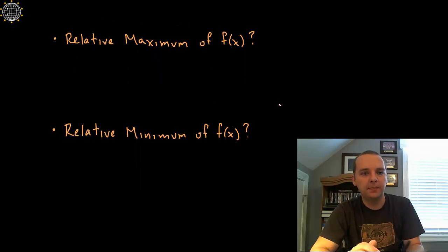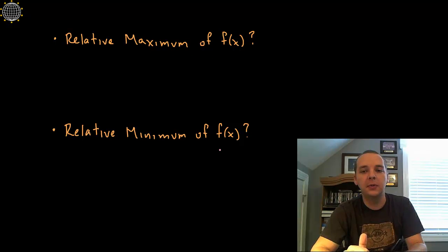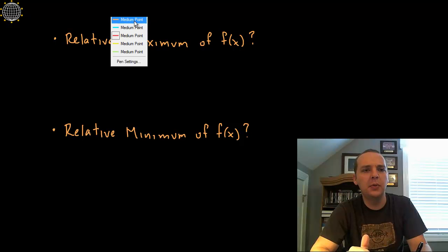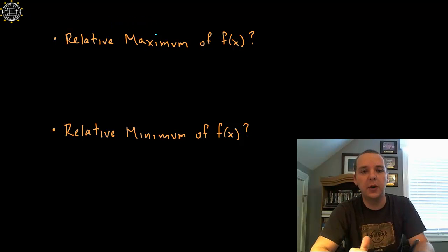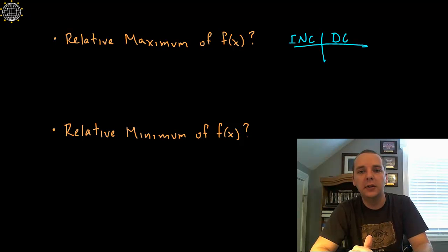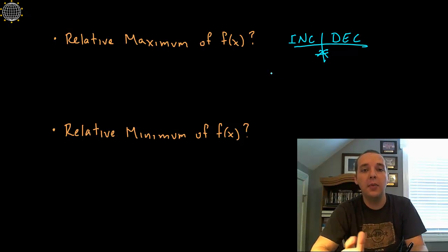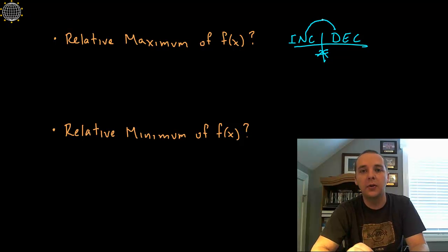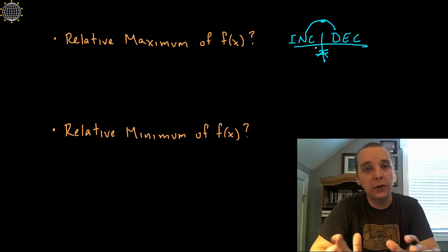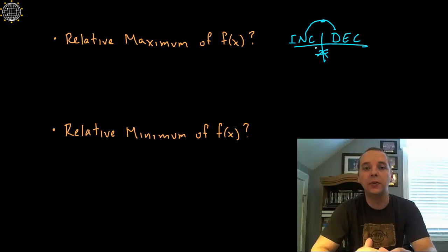A couple of other typical questions: where does the original function have maximums and minimums? Let's think again — what does it mean to be a maximum or minimum? The first derivative test says that if your function changes from increasing to decreasing, then this x-value right in the middle has got to be a maximum, because the graph goes up and then down with a critical value in the middle. A critical value is where the derivative would be 0.